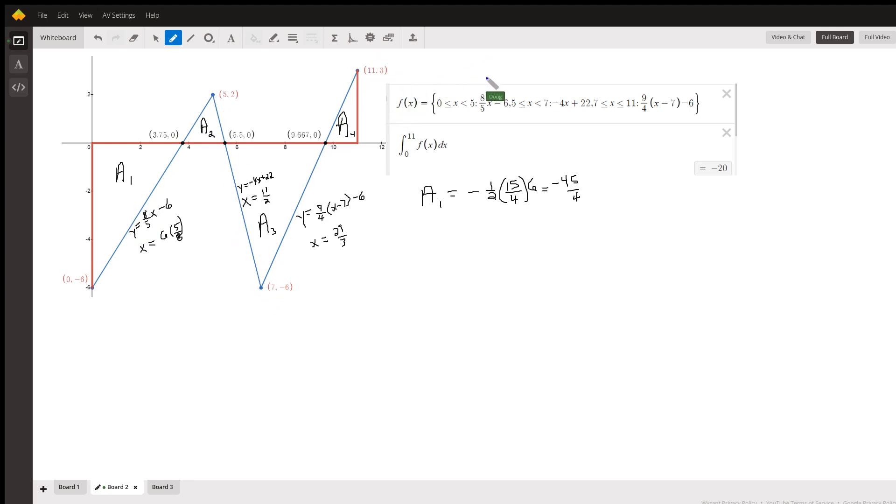Here is a piecewise function that describes that function. If you want the equation of this segment right here, you could use this point and this point to calculate the slope, which would be 8 fifths.